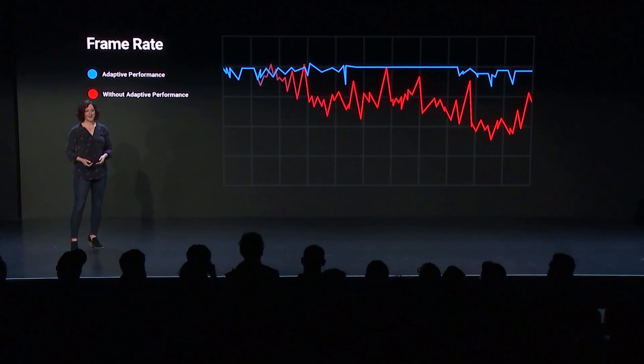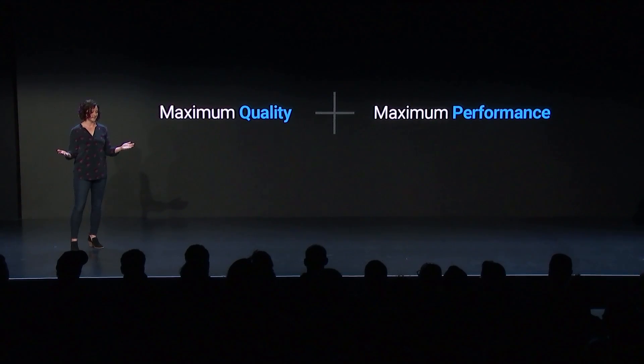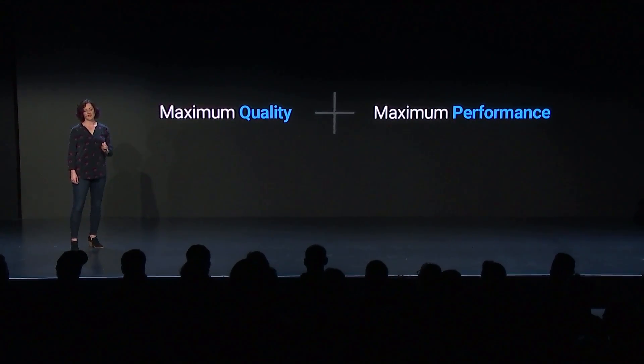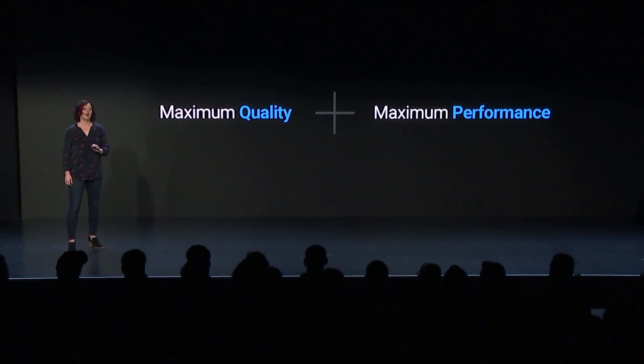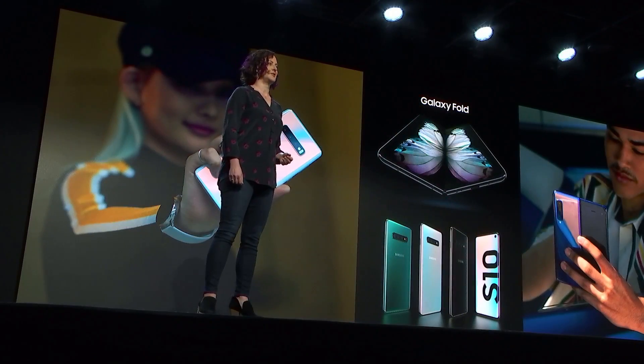By keeping a closer eye on a device's thermal trends, we can adjust performance on the fly and avoid throttling altogether. With this kind of dynamic adjustment, we can find that balance between maximum quality and maximum performance on a range of devices. We're working with the world's largest Android device manufacturer to make this happen first on some of the most popular devices. Our partnership with Samsung will enable you to use Adaptive Performance on Galaxy devices like the new flagship Galaxy S10, Galaxy Fold, and coming soon to many existing Samsung devices already in players' hands around the world.